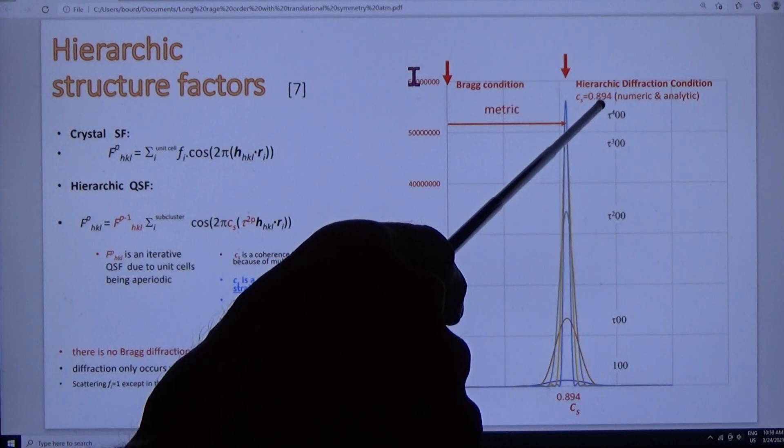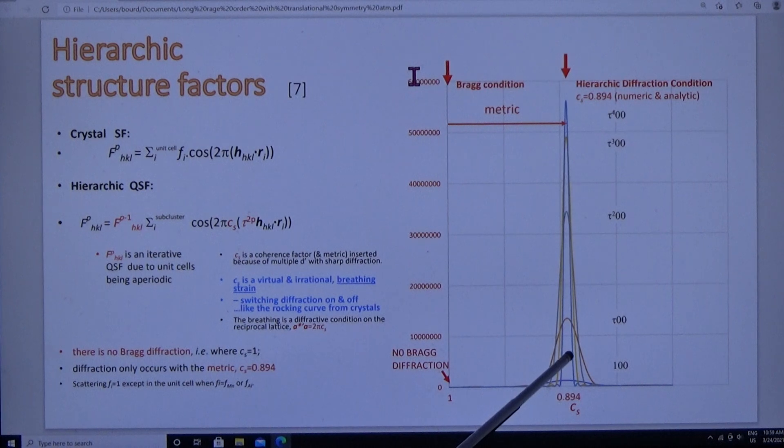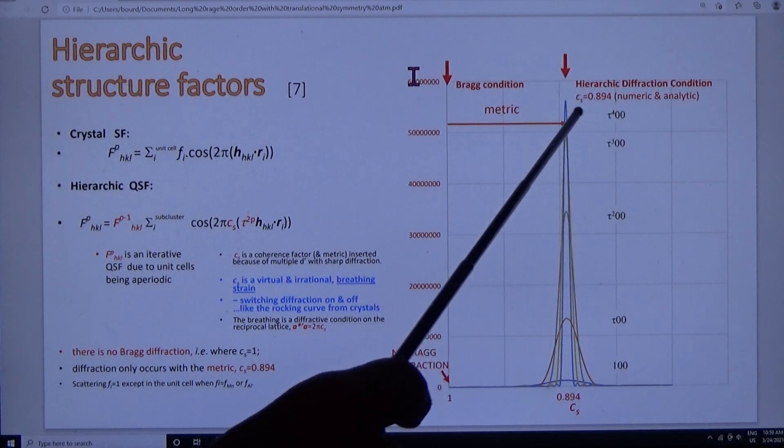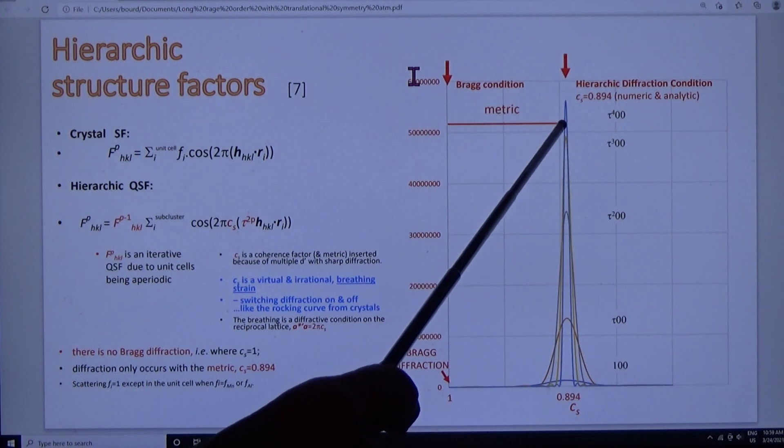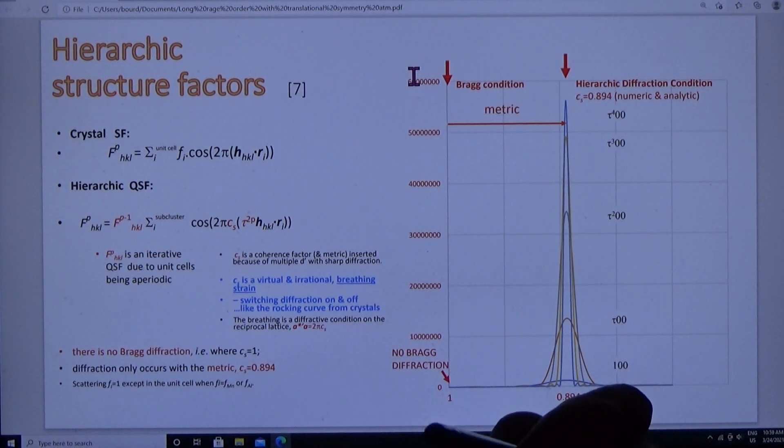But when we scan Cs numerically, we discover the quasi-Bragg condition for these beams that we started with. And it's the same condition for all the beams in Shetman's data. The divergence from the Bragg condition is this factor 0.894, and because it's a universal number in the diffraction, it is the metric.